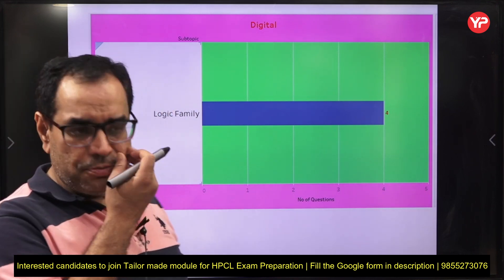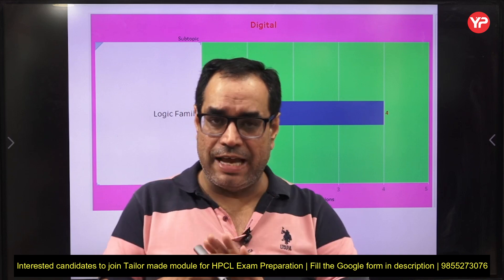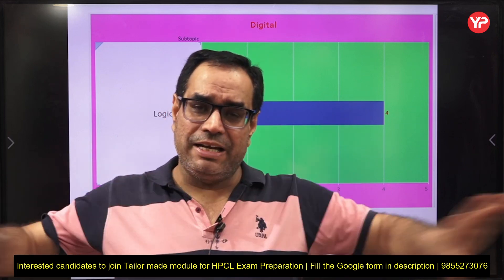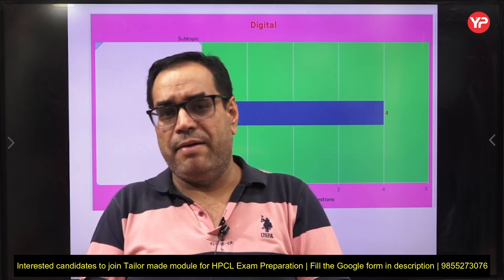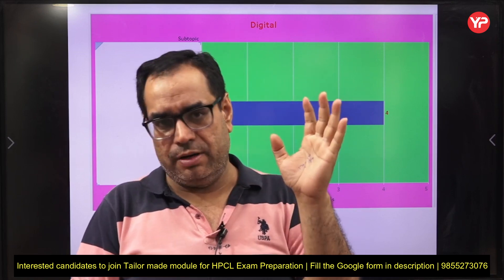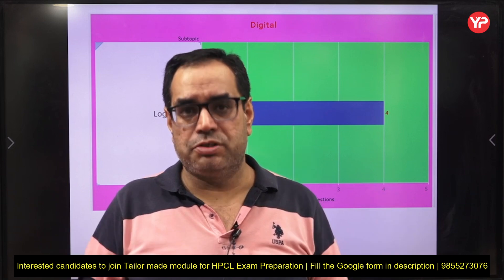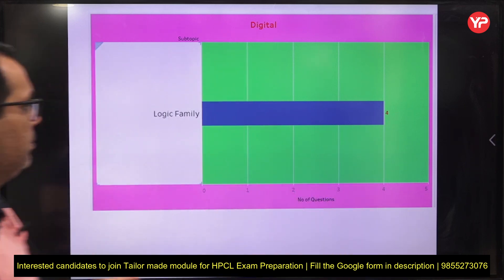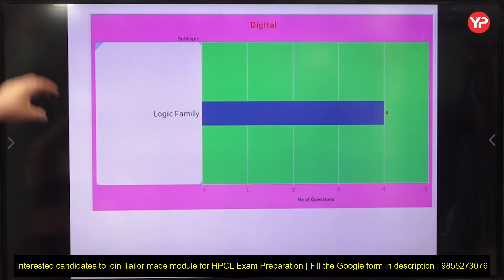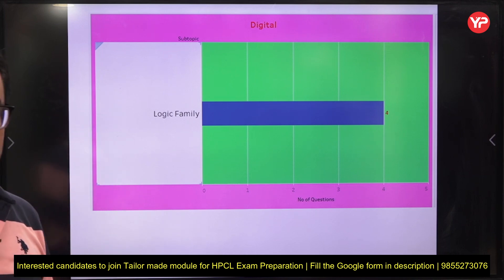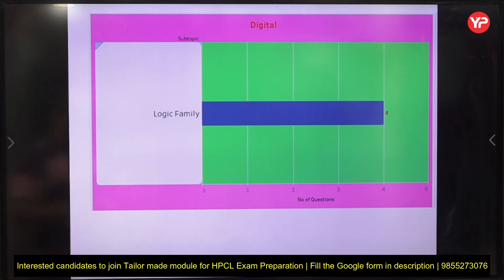In digital electronics, HPCL generally asks questions from ADC/DAC and logic family. You can skip most of digital electronics — mainly focus on logic family and A-to-D and D-to-A converters. You can also cover logic gates and basic multiplexers. There were four questions from logic family alone, so ADC/DAC is also important.